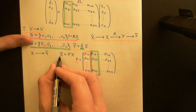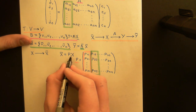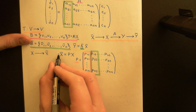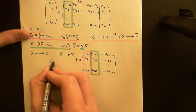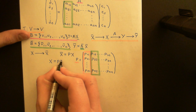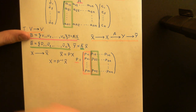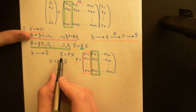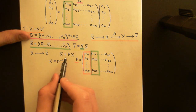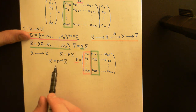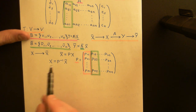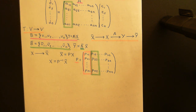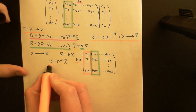If I want to do the inverse — turning coordinates with respect to the barred basis back into coordinates with respect to the unbarred basis — all that's going to be is multiplication by the inverse matrix P-inverse, which will always exist because you can always go between these two coordinate systems.